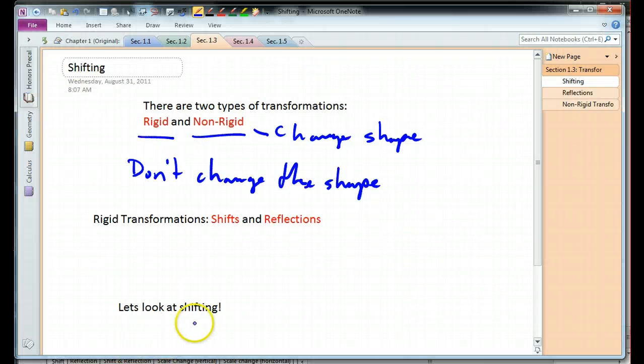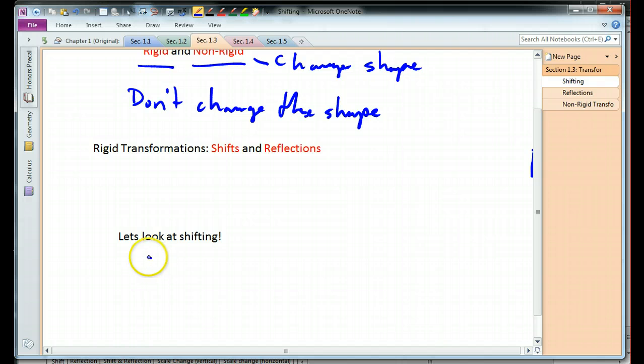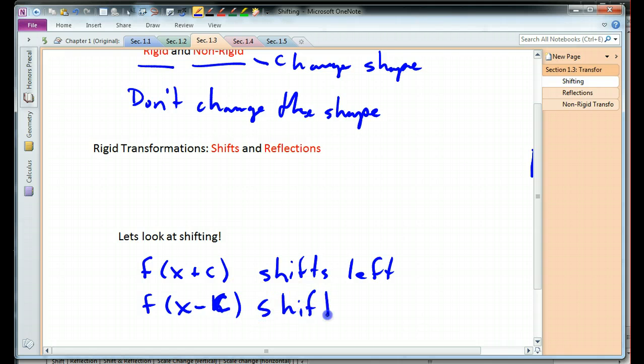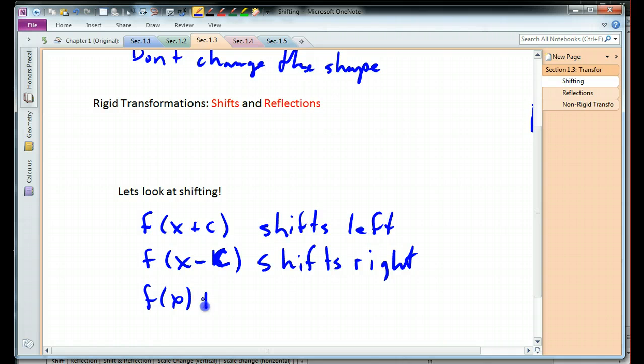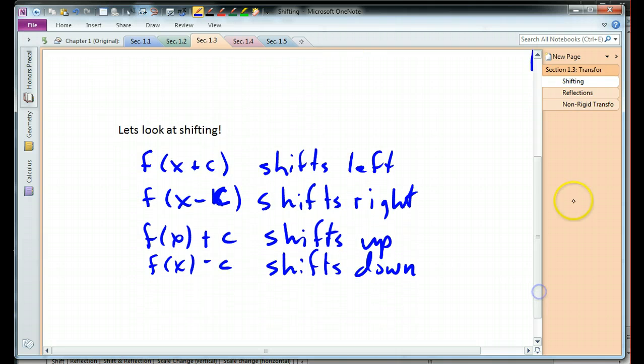So, let's summarize what we just learned here. If I have f of x plus a constant, it shifts left. If I have f of x minus a constant, it shifts to the right. If I have f of x with a constant being added to the whole function, it shifts up. And f of x with a constant being subtracted from the whole function, it shifts down. So, those are rigid transformations. They do not change the shape of the graph.